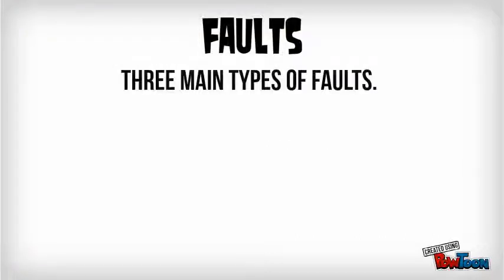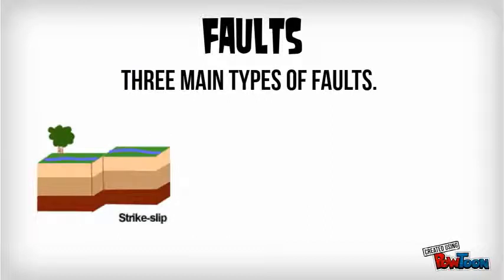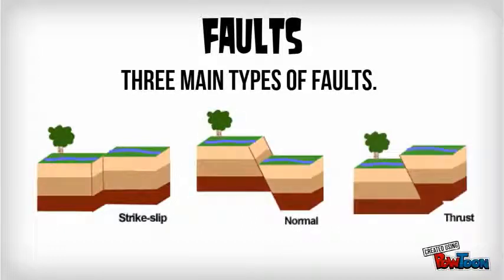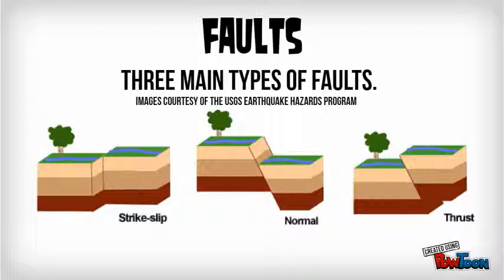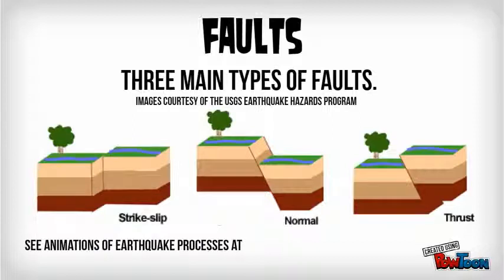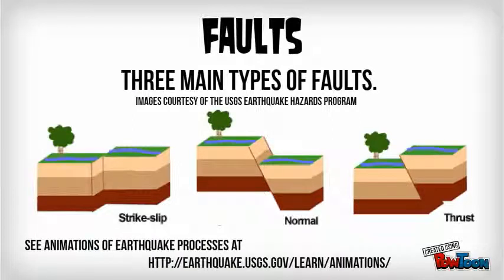There are three different types of faults primarily. There's the strike-slip fault, in which two tectonic plates are moving past one another horizontally. Then there's also the normal and thrust faults, and in both of these cases one plate is being pushed up compared to another or being pulled down. If you'd like to see animations of these processes, I'm including a link to a website where you can see these in action.